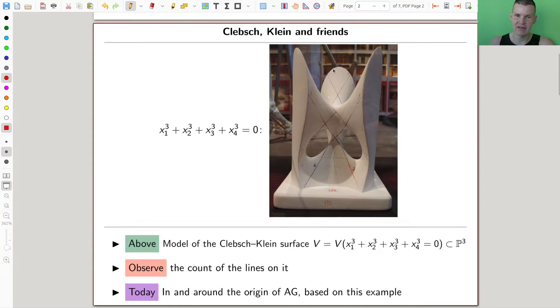So here is a model of the so-called Klebsch-Klein surface, sometimes called Fermat surface. But anyway, the surface is given by this type of equation. And this is a high dimensional surface, this is just a model, a projection, whatever.